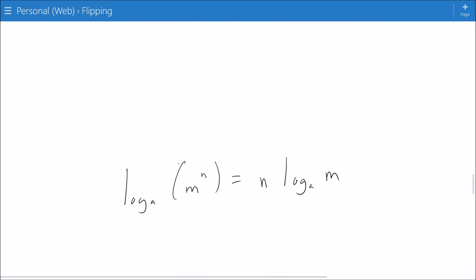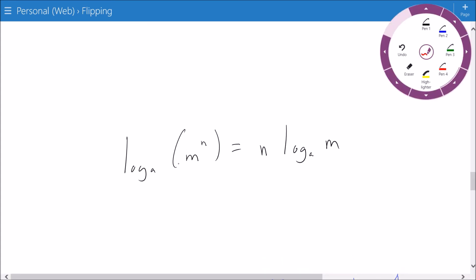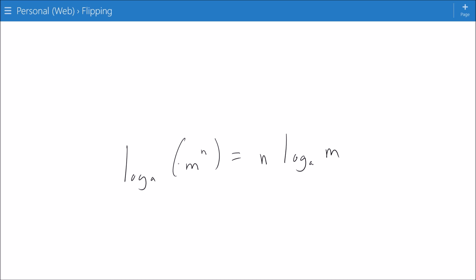Okay, just about done. Let's look at a little bit more here. I've got an interesting one here. Log base a of m to the n is equal to n times log base a of m. Interesting, and very useful. Very, very useful. This gives us a lot. This is one of the powerful things about logarithms.